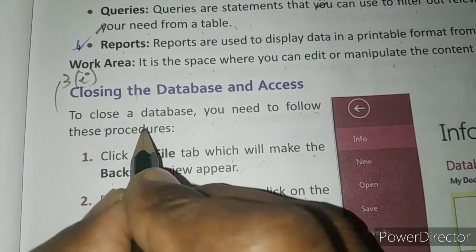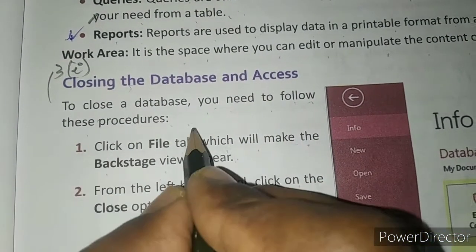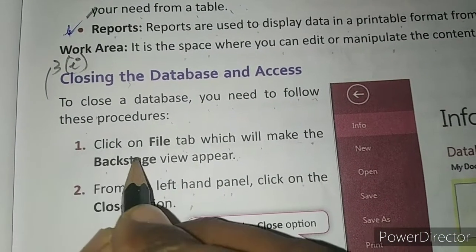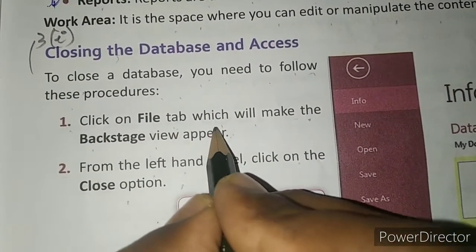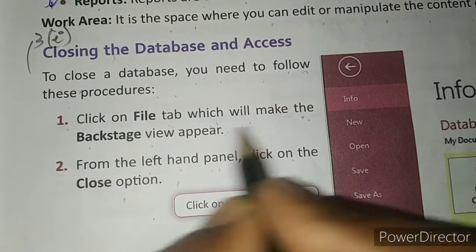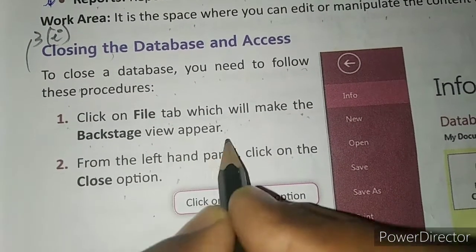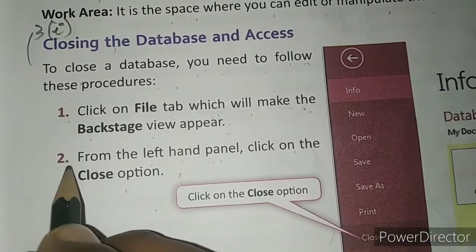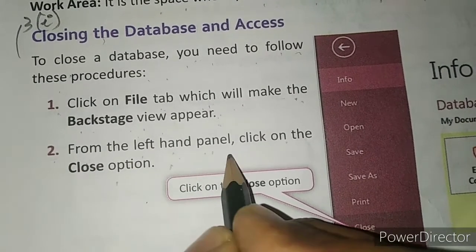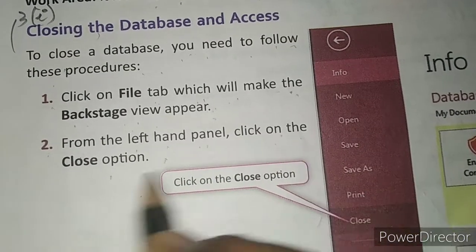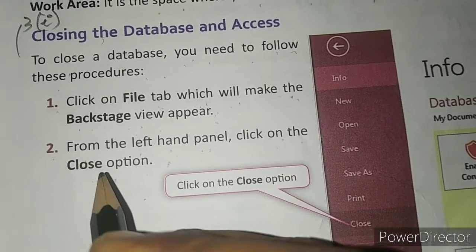To close the database, follow these steps: first, click on the File tab, which will make the backstage view appear. Then, from the left-hand panel, click on the Close option. After that, the database will be closed.